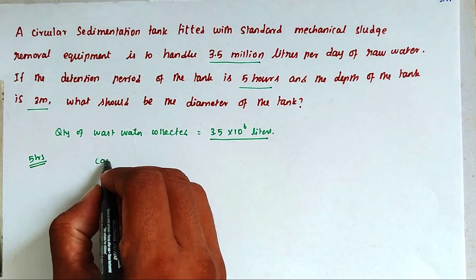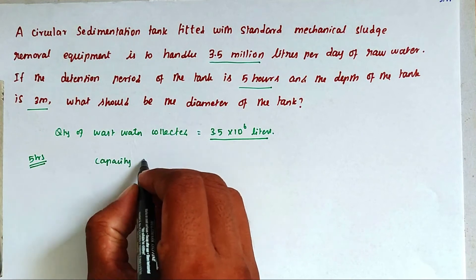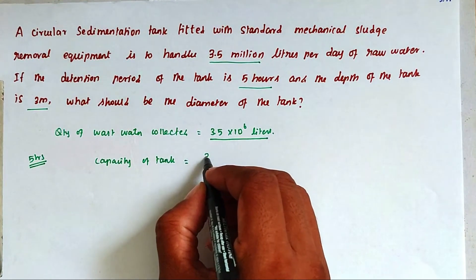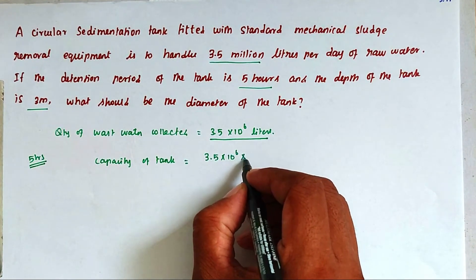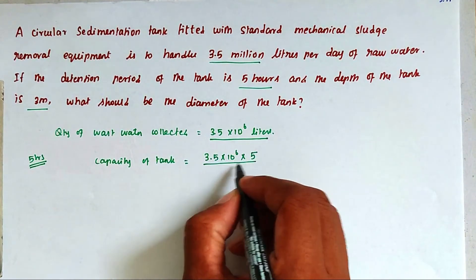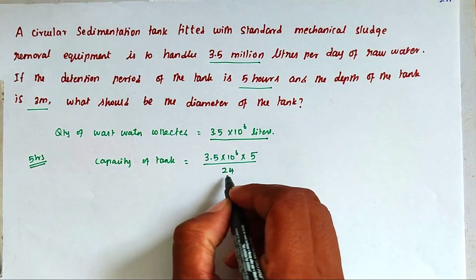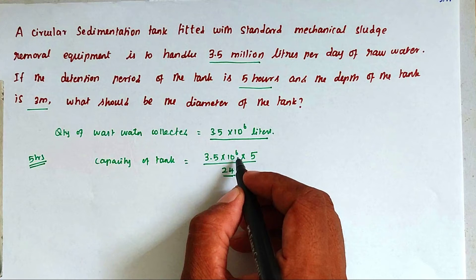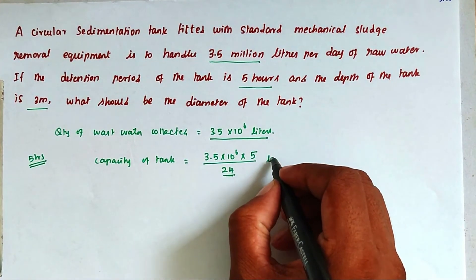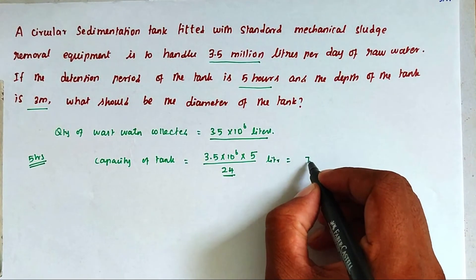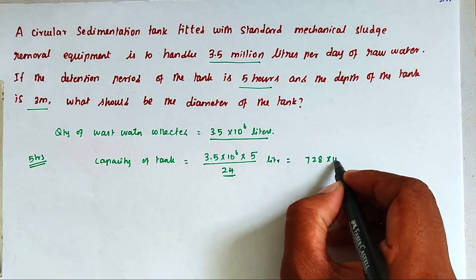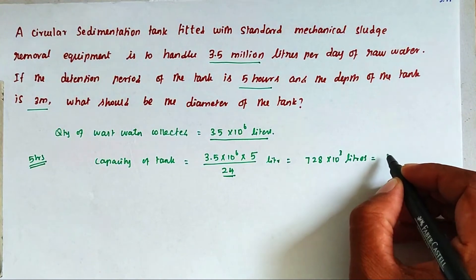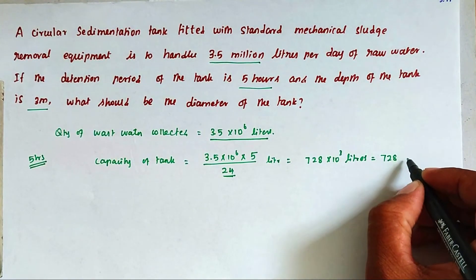So now the capacity of tank equals 3.5 into 10 power 6 into 5 hours divided by 24 hours. From 24 hours, only 5 hours the 3.5 million liters is maintained. So the capacity of tank will be 728 into 10 power 3 liters, that is 728 meter cube.